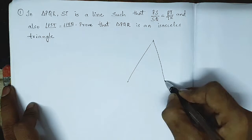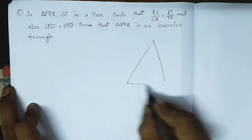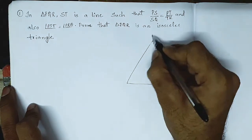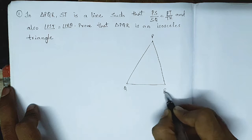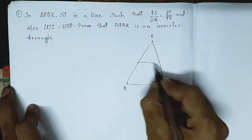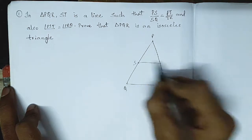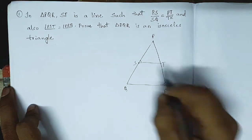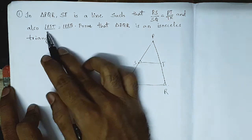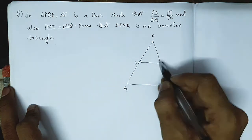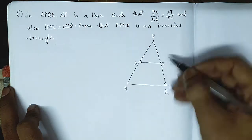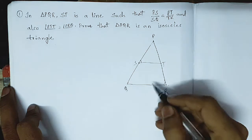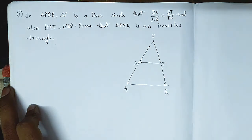They have given the triangle PQR. ST is a line, and they have given that angle PST and angle PRQ are both equal.